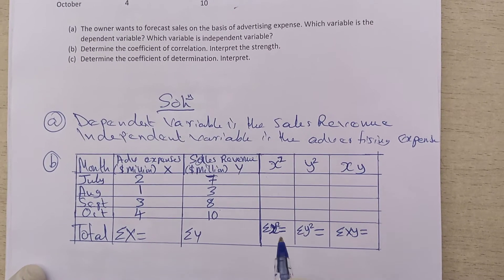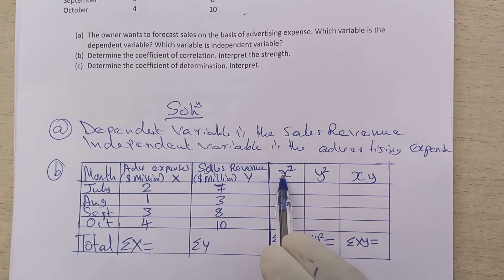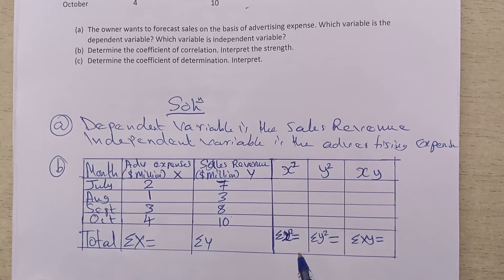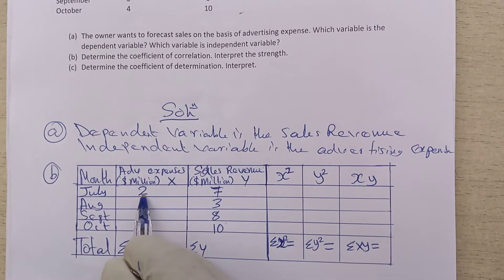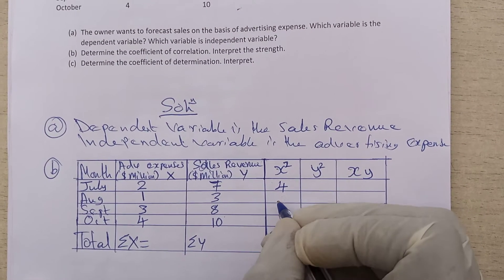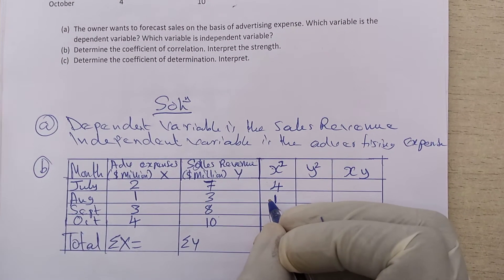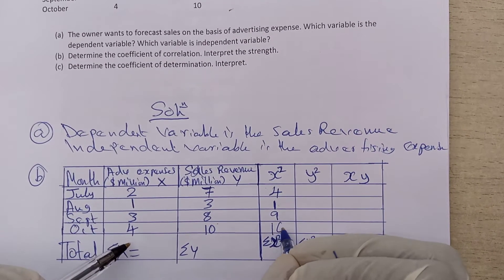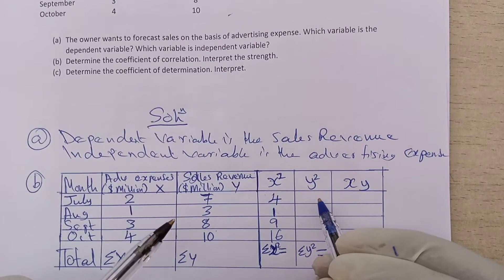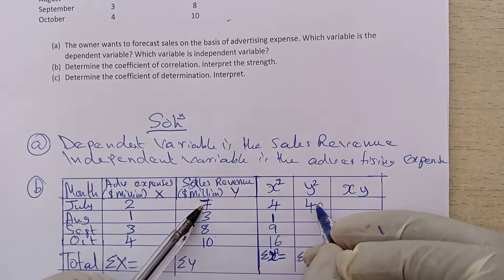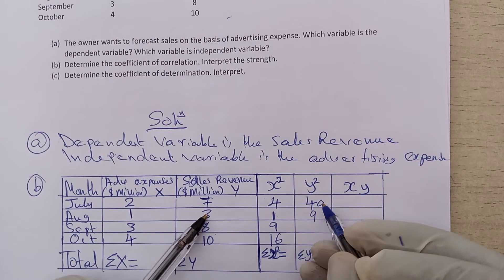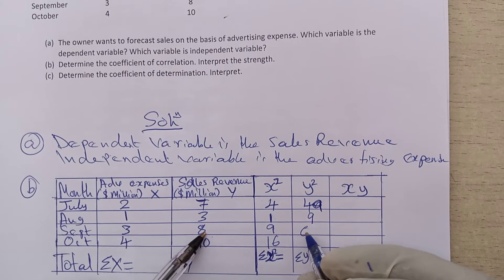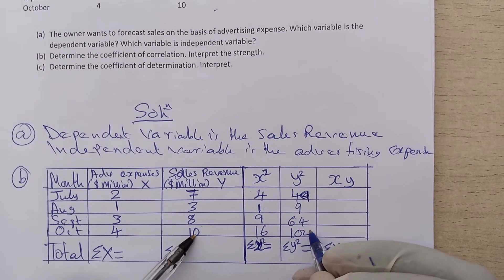To find X squared, you square each X value in each cell. So two squared is four, one squared is one, three squared is nine, four squared is sixteen, seven squared is forty-nine, three squared is nine, eight squared is sixty-four, and ten squared is one hundred.